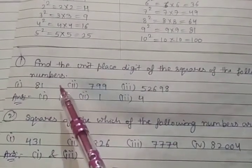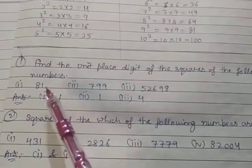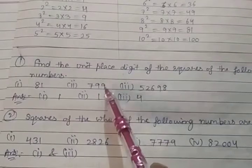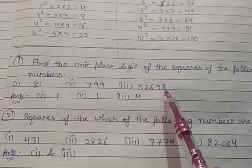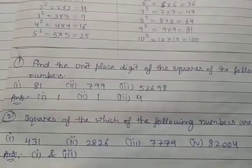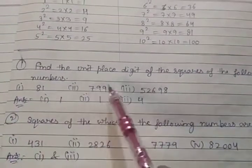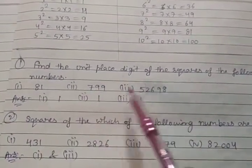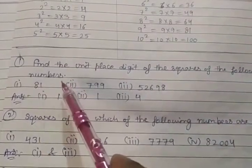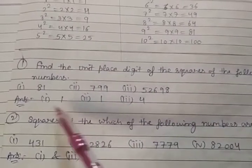Number 1. Answer: the unit place digit. First number, so what will the first number be? We will multiply the number by 2. The answer is 81, so what will the answer be?